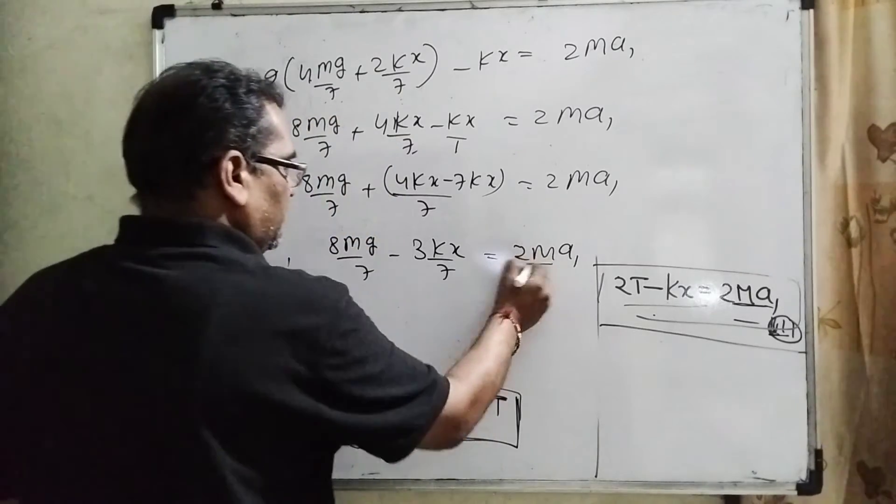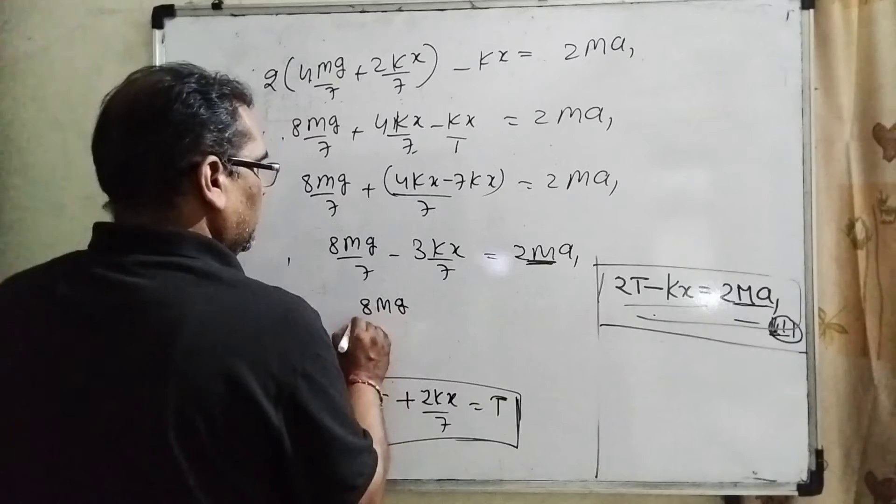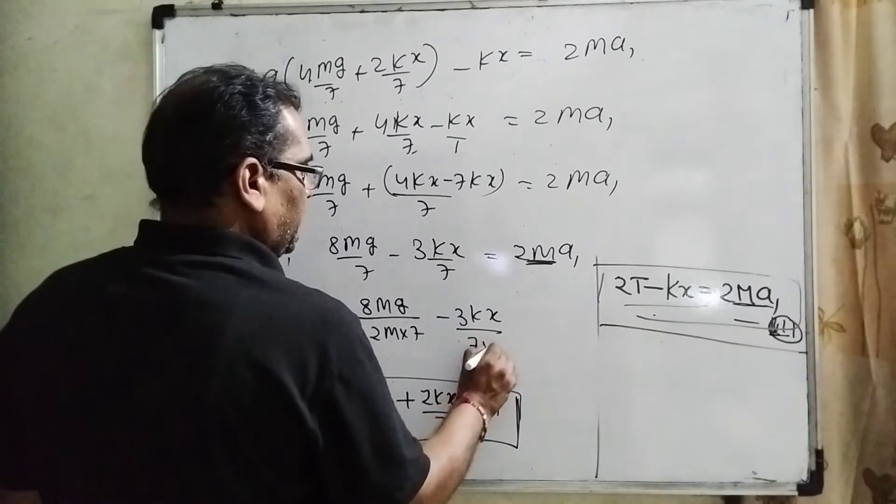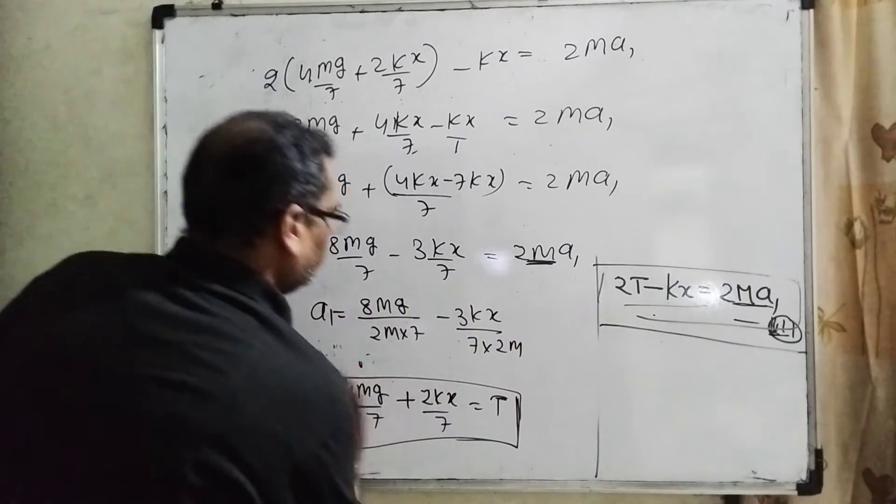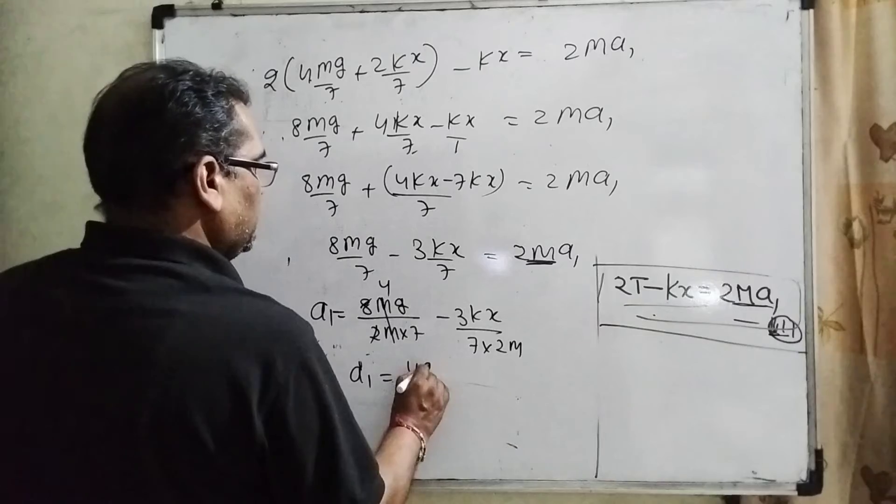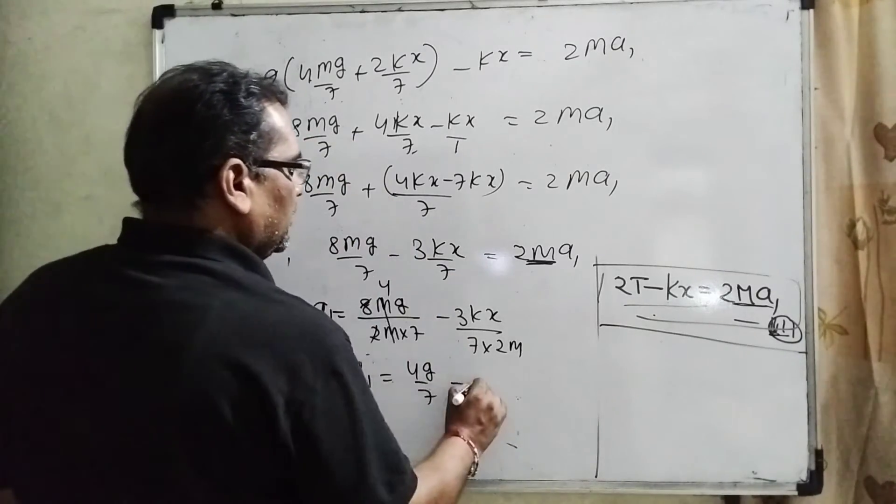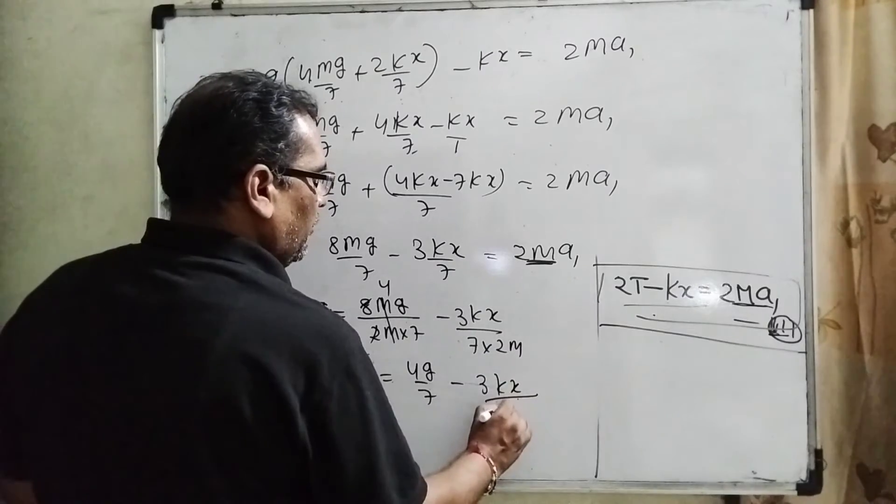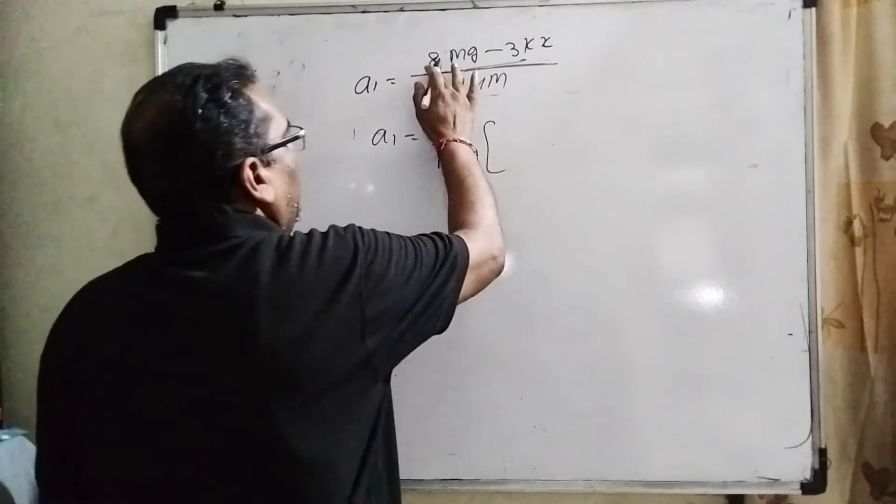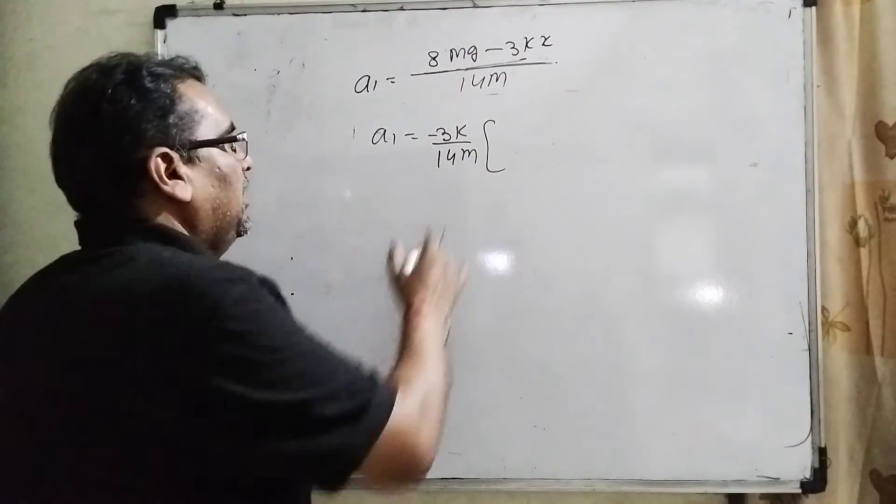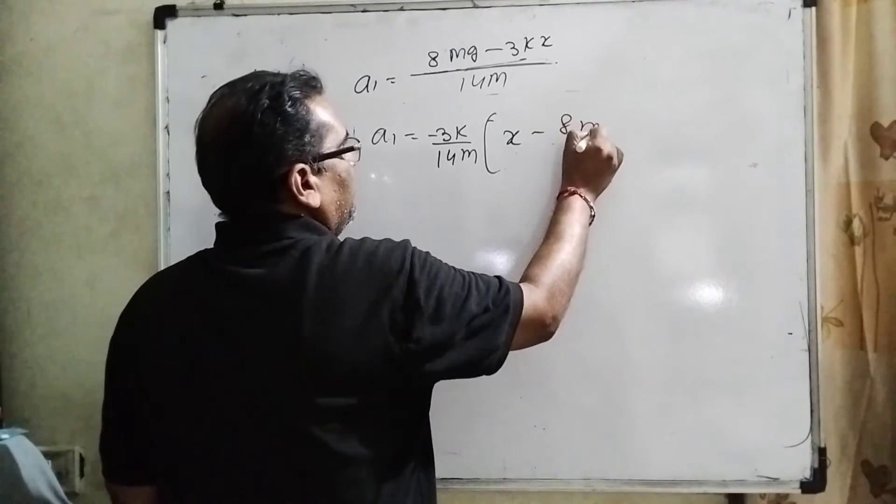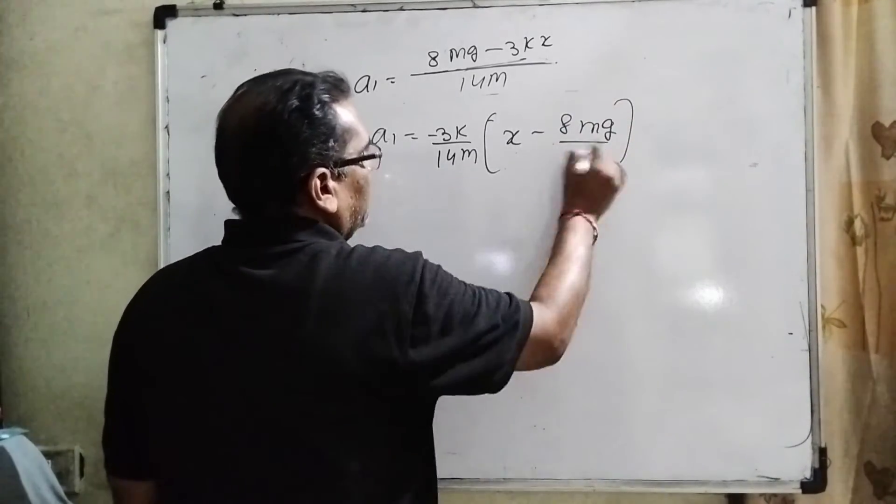Now substituting this value T in equation third. What is the value of T? 2(4mg/7 + 2kx/7) - kx = 2ma1. Then 8mg/7, 4kx/7 - kx = 2ma1. Then 8mg/7 and taking the LCM is 7, 4kx, 7 minus 7kx = 2ma1. 8mg/7 and 4kx - 7kx becomes -3kx/7 = 2ma1. Then it can be written as 2m is transposing. Now 8mg/(2m × 7) - 3kx/(7 × 2m). Now it becomes a1. m cancels, 2 for 8. Then a1 = 4g/7 - 3kx/14m.